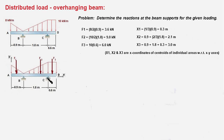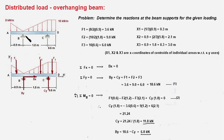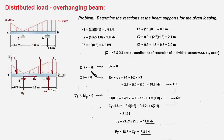The next step is to draw a free body diagram of the beam, show the reaction forces at B and C, and apply the equilibrium equations. B is a pin support, so we show two forces: BY in the vertical direction and BX in the horizontal direction. At C we have a roller support, so there is only one force CY in the vertical direction. Applying sigma FX = 0 yields BX = 0.